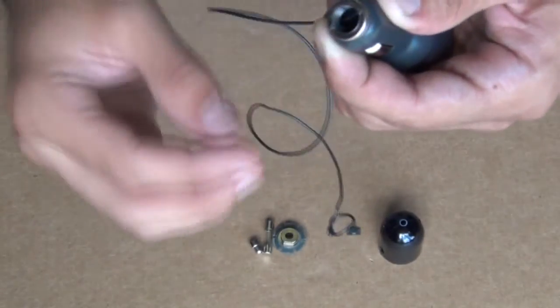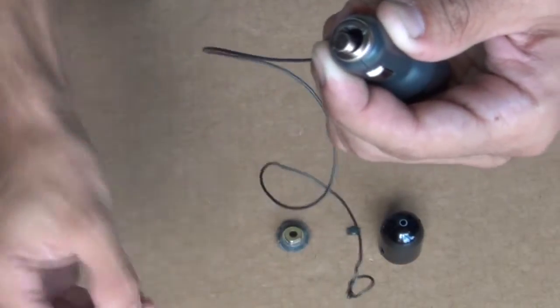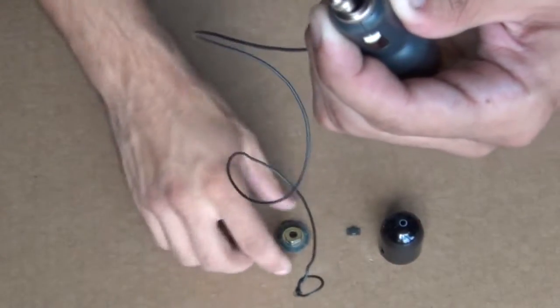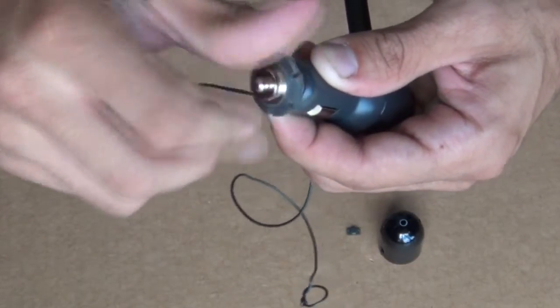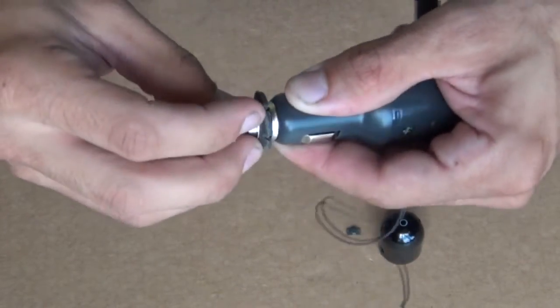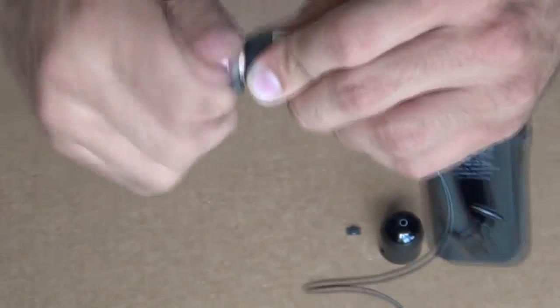Then we'll put the spring in, fuse, small nipple and the threaded portion of the end of this power adapter. Put all that together and then we'll just screw that in place.